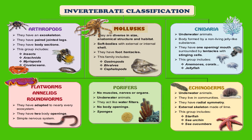Echinoderms are also underwater animals, and they live in communities. They are symmetrical and they have an external skeleton made out of lime. This group includes starfish, sea urchin, and sea cucumbers.